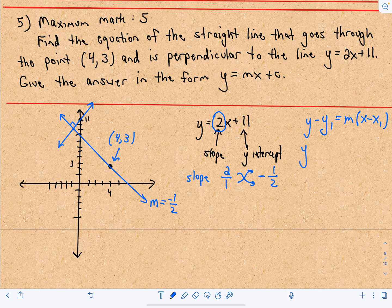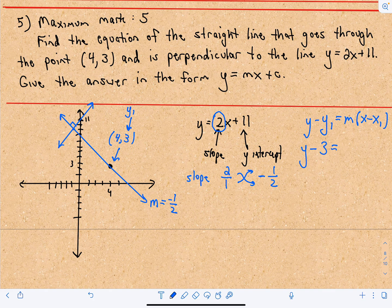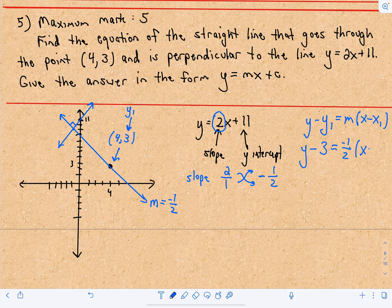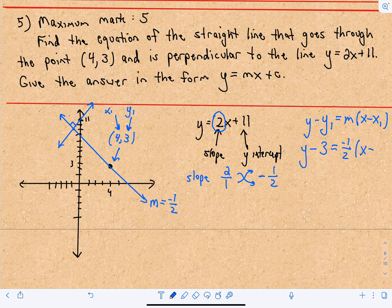So we know our y-coordinate was equal to 3. So that's going to be our y sub 1 value. So y minus 3. We've got our new slope. We just said that it's going to be negative 1 half. And now we also know our x sub 1. That's our x-coordinate, which is going to be 4.